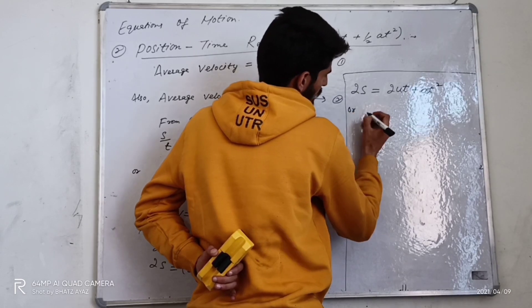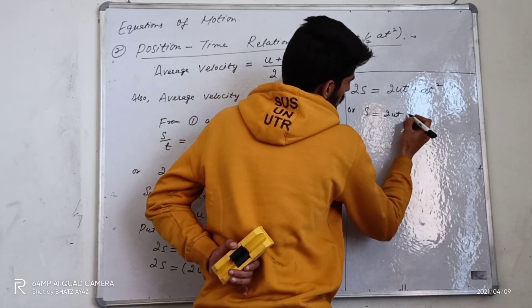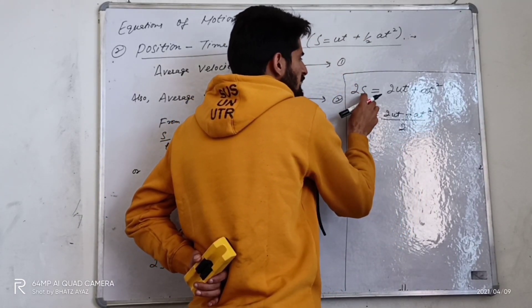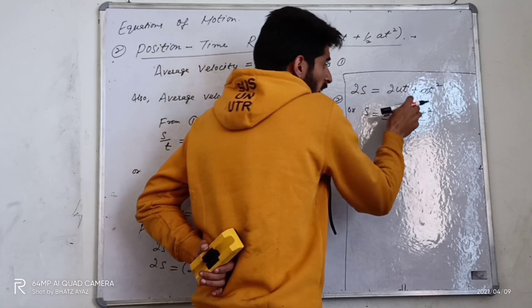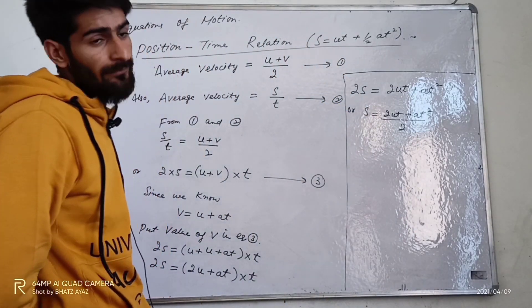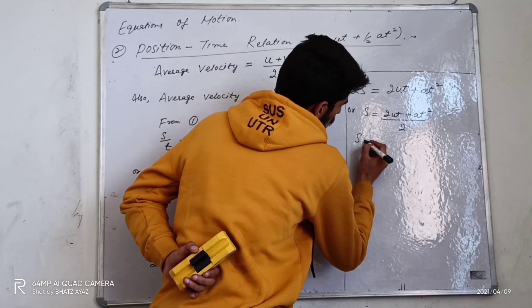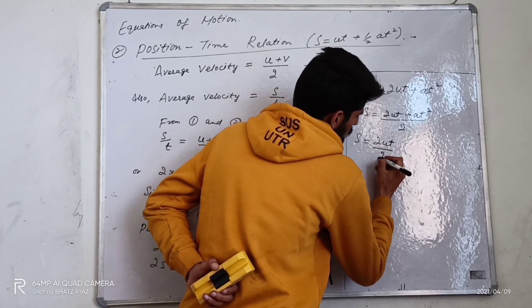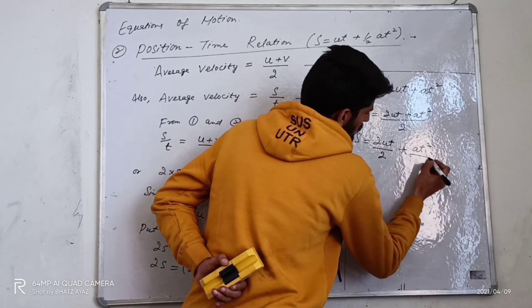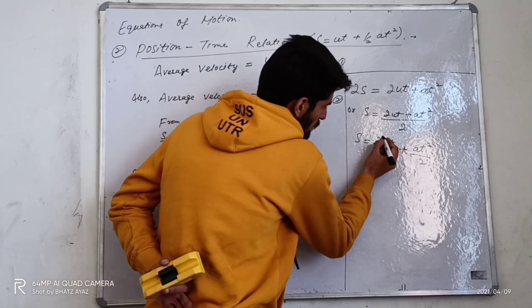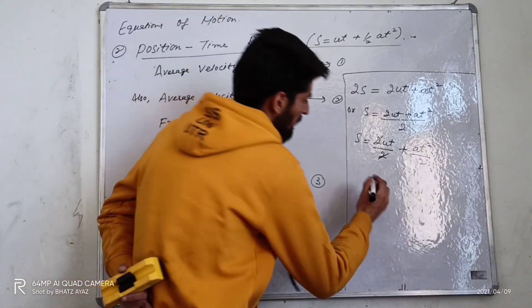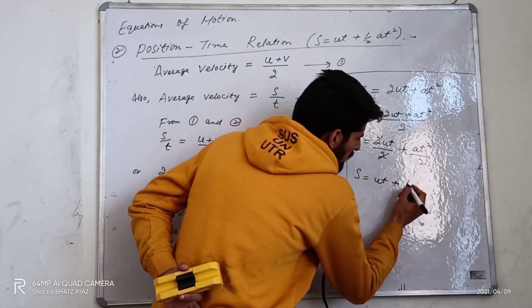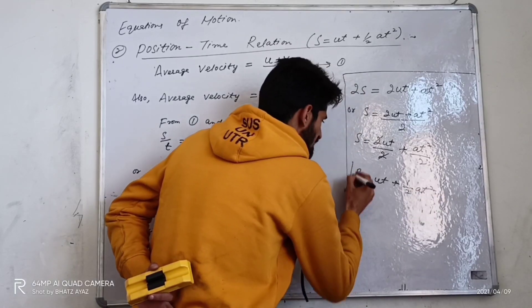I can write here that s is equal to (2ut plus at squared) whole divided by 2. Expanding: this is 2ut divided by 2 plus at squared divided by 2. The 2 and 2 will cancel, so s is equal to ut plus one half at squared. This is the second equation of motion, the position-time relation.